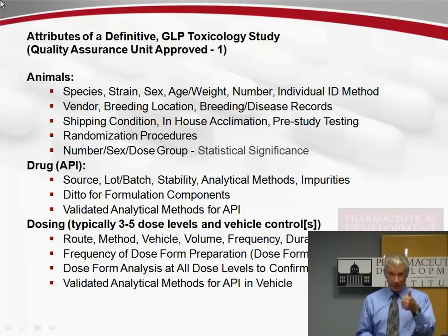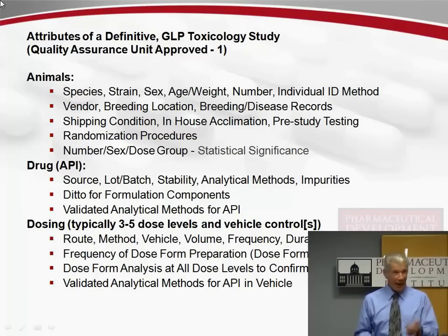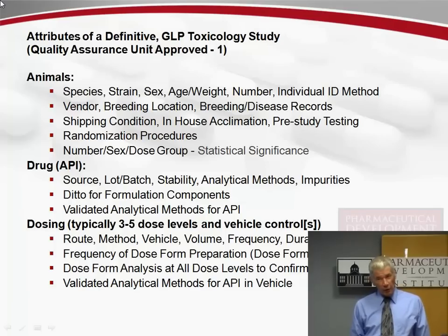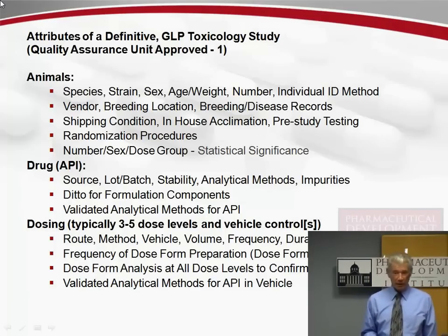At the end of the dosing day, I take samples of those formulations and send them off to the analytical lab where they're tested for content — is the API what it's supposed to be, and is the concentration what it's supposed to be? If it's supposed to have four milligrams per mil, does it have four milligrams per mil, or does it have eight milligrams per mil? These are very important issues — this confirms that the animals in that particular dose group did in fact receive the stated dose. We need validated analytical methods for the API in that vehicle.